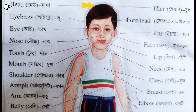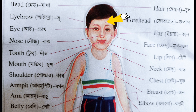Head — the Bangla meaning of Head is 'Matha'. Hair — the Bangla meaning of Hair is 'Chul'. Forehead — the Bangla meaning of Forehead is 'Kpal'.